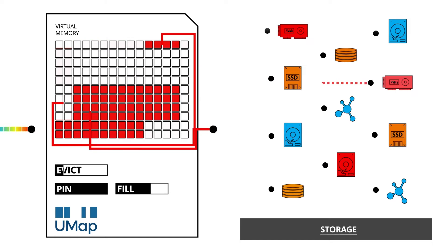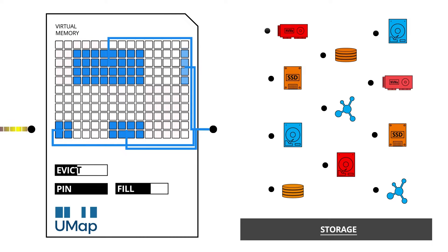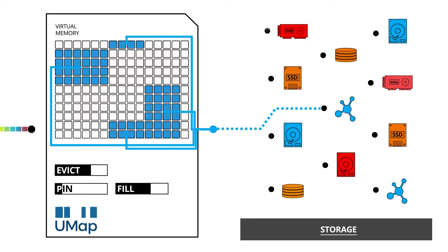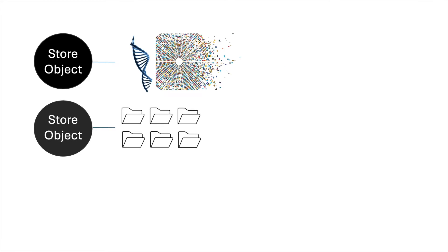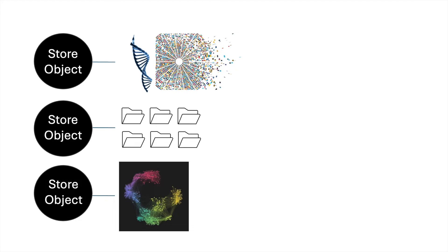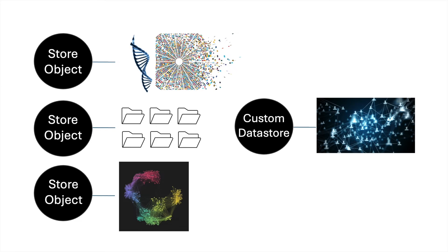UMAP handles the user's customized page size and switches seamlessly between different data stores. For convenience, UMAP provides three data stores. With UMAP's extensible design, other data stores can be plugged in by application developers.